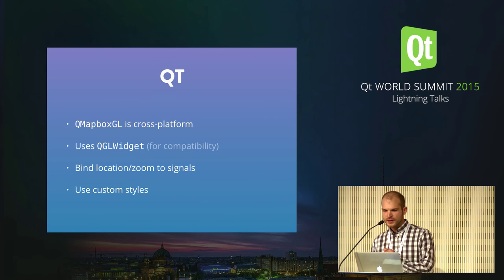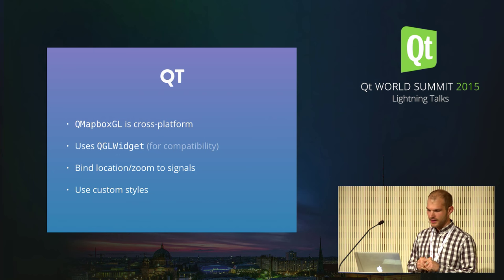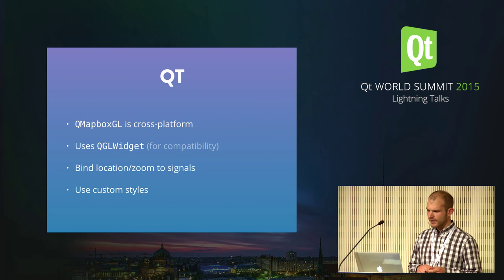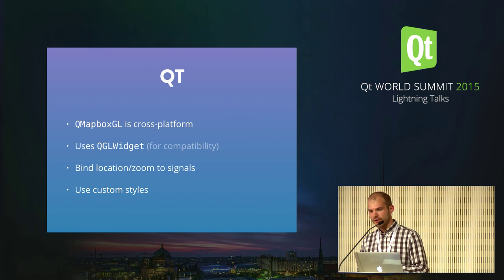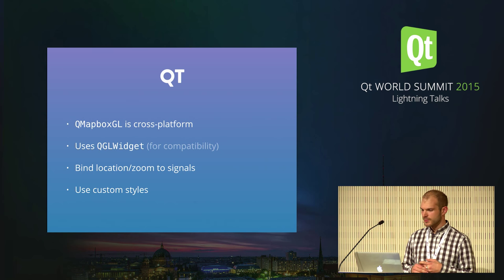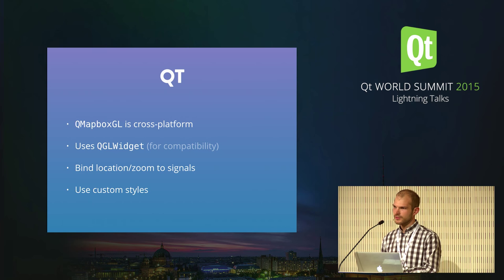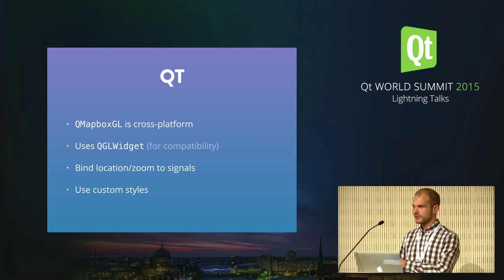To support Qt, we developed QMapbox GL, which is basically a thin wrapper around the C++-based Mapbox GL renderer itself that you can embed into your mobile or embedded apps. This means you don't have to rely on platform-specific ways for rendering maps — for example, Apple provides its own map rendering, but for that you have to opt into the App Store. The QMapbox GL wrapper handles all of the signals and slots so that you can directly control the map location and style being displayed from the rest of the app.